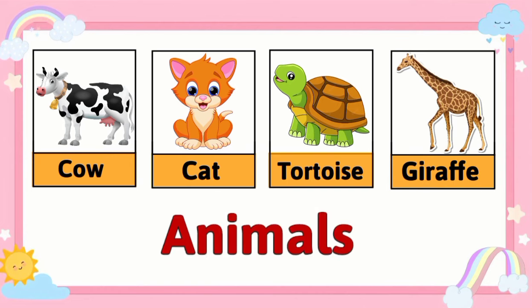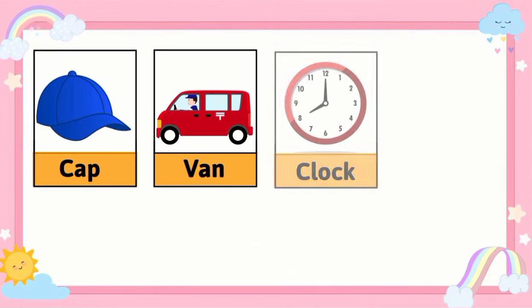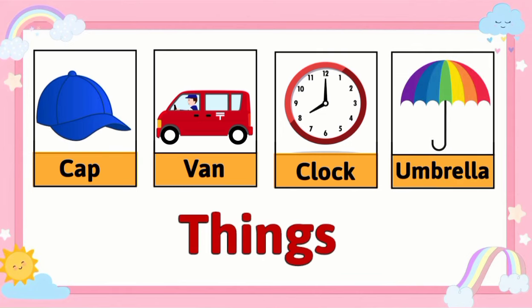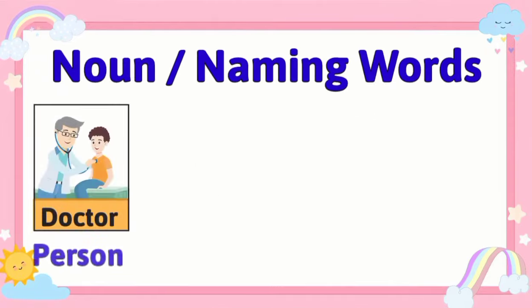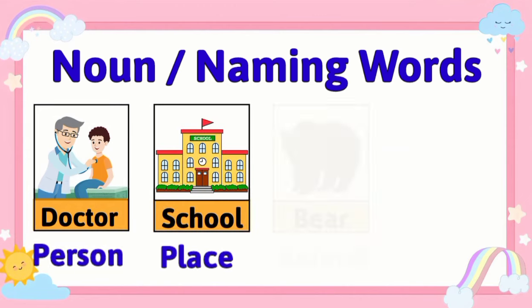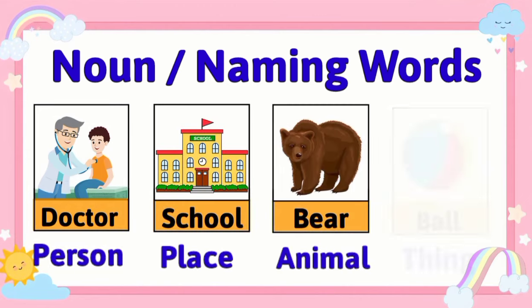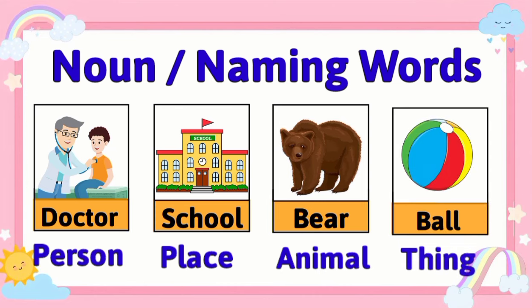Cap, van, clock, umbrella, and many more — these are examples of names of different things. So we read that a noun is the name of a different person, place, animal, or thing. Now let's understand this better with the help of a few sentences by identifying the nouns.